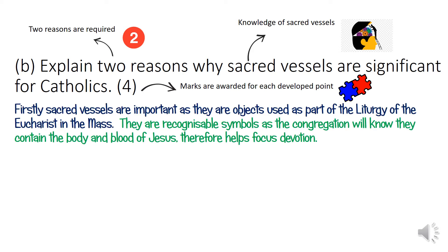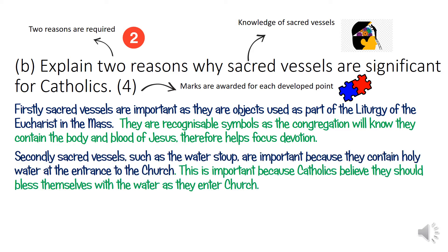Firstly, sacred vessels are important as they are objects used as part of the liturgy of the Eucharist in Mass. They are recognisable symbols as the congregation will know they contain the body and blood of Jesus, therefore helping to focus devotion. Secondly, sacred vessels such as the water stoop are important because they contain holy water at the entrance to the church. This is important because Catholics believe they should bless themselves with water as they enter the church.